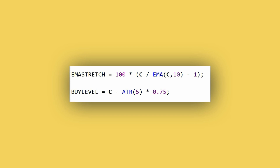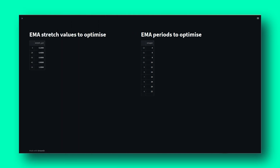The two logical questions at this stage are: what period of EMA to use, and how much of a stretch do we want to see in the market before trying to buy it? To answer these questions, let's run a simple optimization. I will use AmiBroker, which is a specialized trading strategy development software. I'm going to test different combinations of EMA period and the stretch constant on all Russell 3000 stocks over the past 13 years. I will test EMA stretch constants ranging from 0.2% to 1%, and EMA periods ranging from 4 days to 30 days.